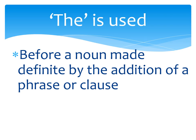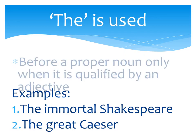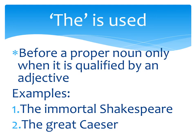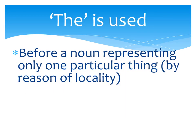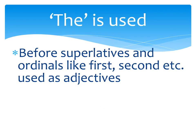Use number three: before a noun made definite by the addition of a phrase or clause. For example, 'the boy in the class.' Use number four: before a proper noun only when it is qualified by an adjective. For example, 'the immortal Shakespeare,' 'the great Caesar.' Use number five: before a noun representing only one particular thing by reason of locality. For example, 'mother is in the kitchen' — meaning the kitchen of the speaker's house. Use number six: before superlatives and ordinals like first, second, etc., used as adjectives. For example, 'the first chapter,' 'the best book.'